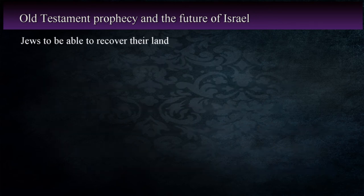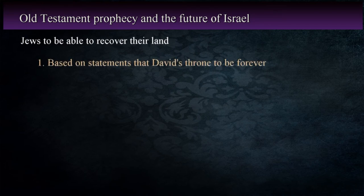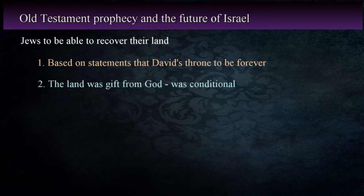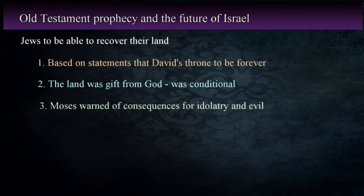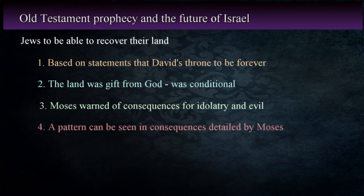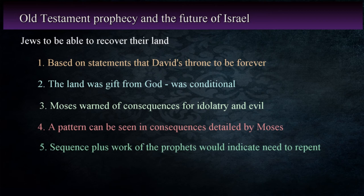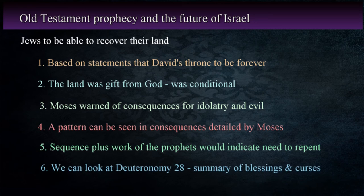Secondly is the idea that the Jews will be able to recover their land and re-establish the kingdom just as it was in the days of David. This is partly in reference to numerous passages that talk about the establishment of the throne of David forever. There are two problems with this idea. The main problem is that possession of the land was a gift from God, but it was conditional. In the latter part of Deuteronomy, Moses warns the people about what will happen if they follow the idolatrous and evil ways of the nations they drove out. A large part of these warnings aren't just reminders to be faithful — they're a prophecy of what's going to happen to them in the future. Based on a review of what Moses stated in Deuteronomy, we can see that there is a pattern to God's delivery of negative judgments against his people, following a particular form and sequence. Coupled with the work of the prophets, there would be sufficient indications that they needed to repent and avoid disaster. We can summarize this in part from Deuteronomy 28, in which Moses pronounces blessings and curses on the nation.